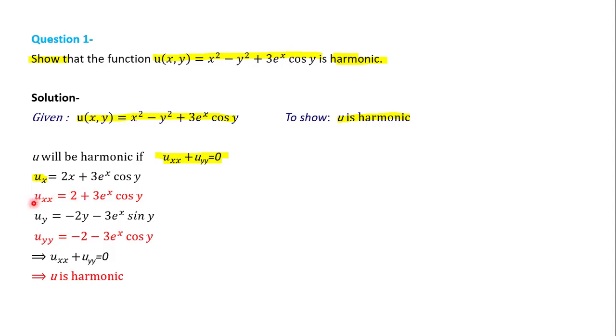Next, u_xx is the partial derivative of u_x with respect to x, which gives 2 plus 3e^x cos(y).